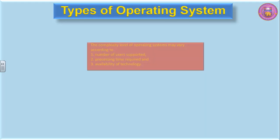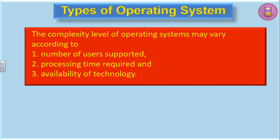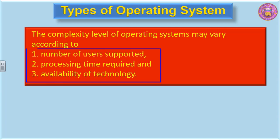There are different types of operating systems. The complexity level of an operating system may vary according to: first, the number of users supported; second, the processing time required; and third, the availability of technology. On the basis of these three factors, we can determine the complexity level of an operating system.